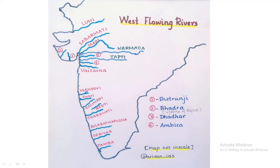Hi, hello friends, welcome to Arivan AIS. Today we are going to see about two topics: west flowing rivers and east flowing rivers. We will see an arrangement of the rivers, not in detail of any rivers. We are going to see where they originate and some details about these rivers. We will know how many rivers flowed in order.